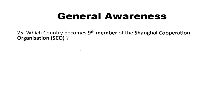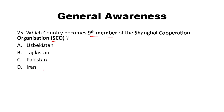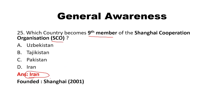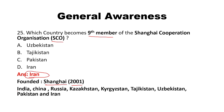Which country became the ninth member of the Shanghai Cooperation Organization (SCO)? The answer is Iran. The SCO was founded in Shanghai, China in the year 2001. All nine members are: India, China, Russia, Kazakhstan, Kyrgyzstan, Tajikistan, Uzbekistan, Pakistan, and Iran. Iran is the most recent permanent member of the SCO. That completes our 25 questions — all the best, thank you!